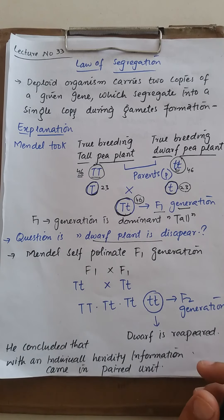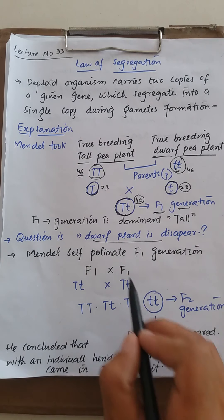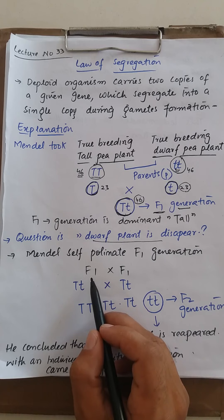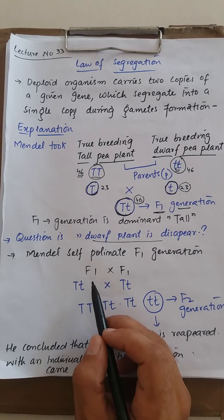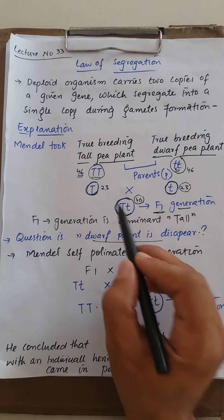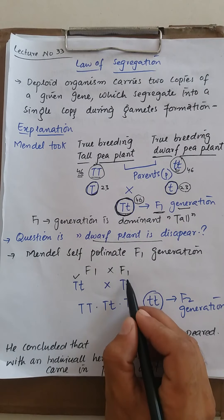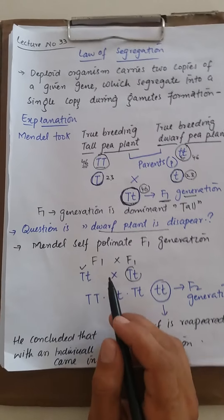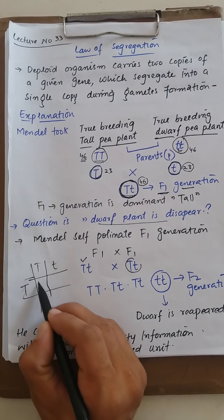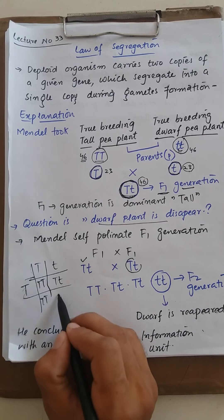Mendel answered this by self-pollinating the F1 generation. The F1 offspring came in the F1 generation, and he self-pollinated it. So F1 multiplied by F1 — Pahle offspring ko wapas mein cross kar diya. So F1 multiplied by F1. Humare paas F1 tha — according to law of dominance, tall. When we crossed F1 multiplied by F1, we get results. When we cross capital T with capital T, we get TT. When we cross capital T with small t, we get capital T and small t.